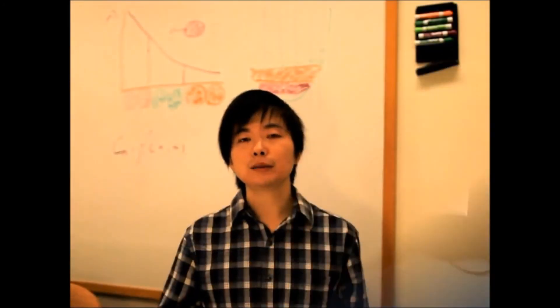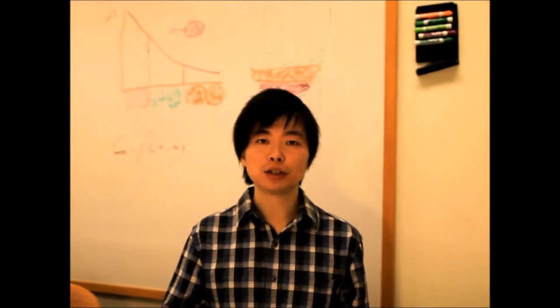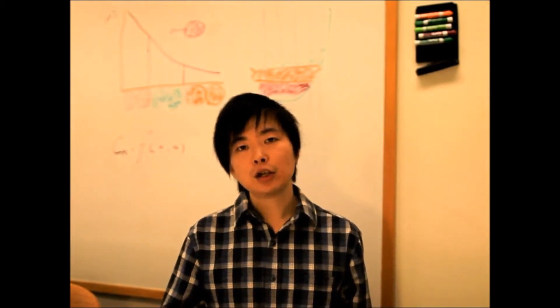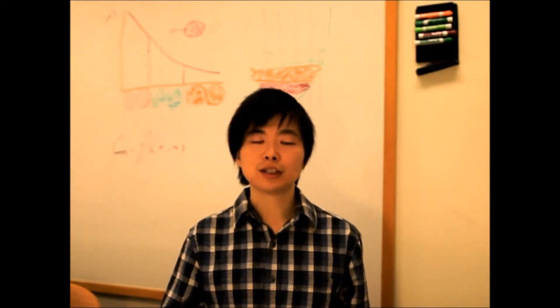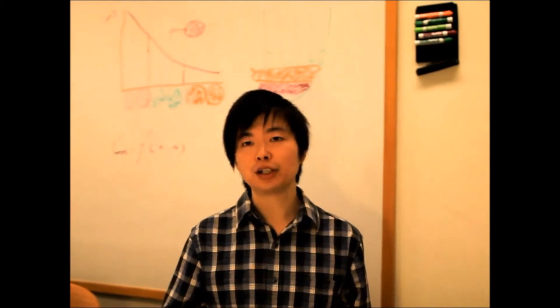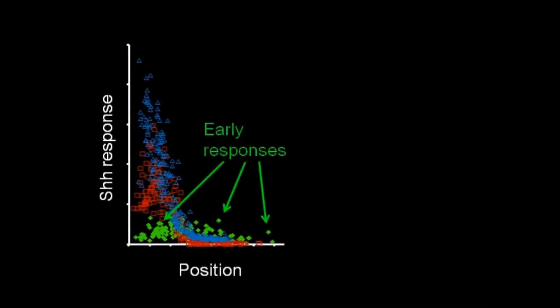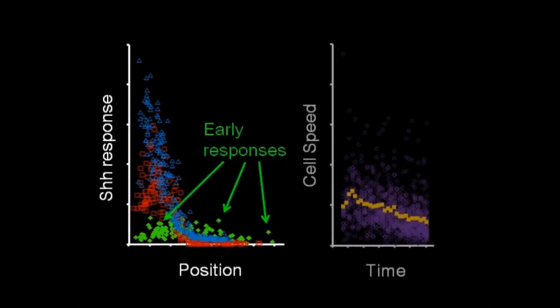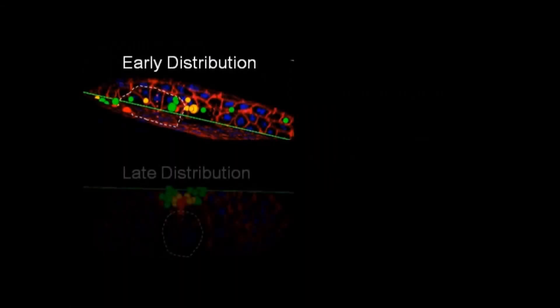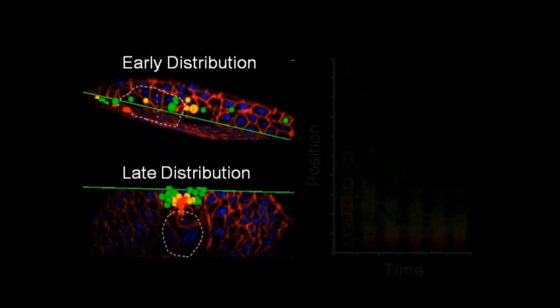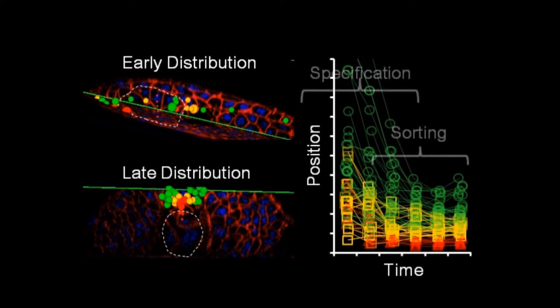As we accumulated more and more tracks, unexpected observations started to emerge. First, we found that the response to sonic hedgehog signaling of the neuron progenitors is quite noisy. Both the responding cells and sonic hedgehog producing cells move around a lot. By tracking and imaging different fate markers, we found that cells are specified in overlapping distributions. Cells then continue to move and unmix to form the final pattern. This shows that pattern formation is a process of self-assembly, where cells, based on their cell fate, move to the correct position.